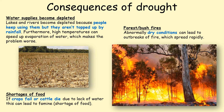Consequences of drought — here are three. If water supplies become depleted, people will be short of water for drinking, washing, or other uses, as people keep using the water but it's not being topped up by rainfall. Shortages of food occur if crops fail or cattle die, which can lead to famine. And finally, dry conditions are perfect for the outbreak of fire.